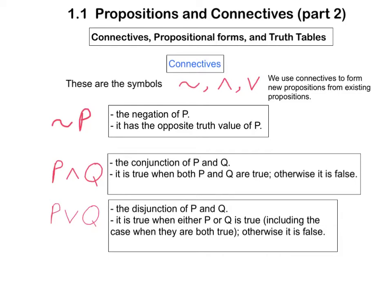So, what are connectives? Well, it refers to these three symbols here, and they're used to create new propositions from existing ones. So, let's imagine that the letters P and Q denote propositions.